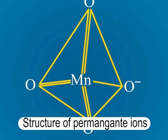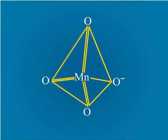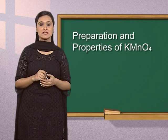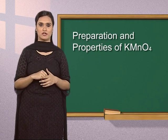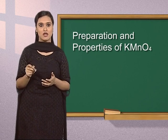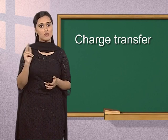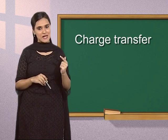Let us have a look at the structure of the permanganate ion. The manganese atom is surrounded by 4 oxygen atoms and is sp³ hybridized, with the 4 oxygen atoms located at the 4 corners of a tetrahedron. Manganese in the permanganate ion is in the plus 7 oxidation state with a d⁰ electronic configuration. The purple color of potassium permanganate is not due to d–d transition but due to charge transfer from oxygen to manganese, which reduces the oxidation state of manganese from plus 7 to plus 6 momentarily.